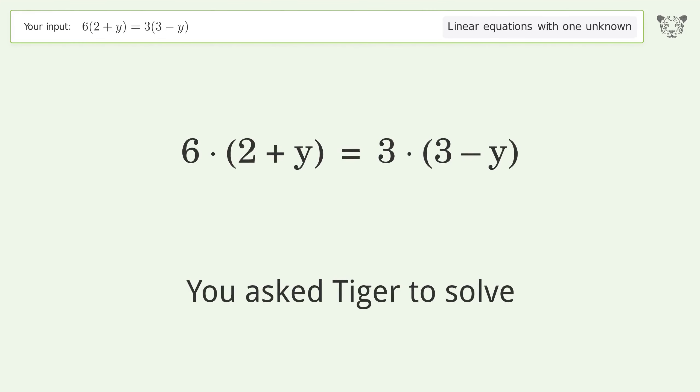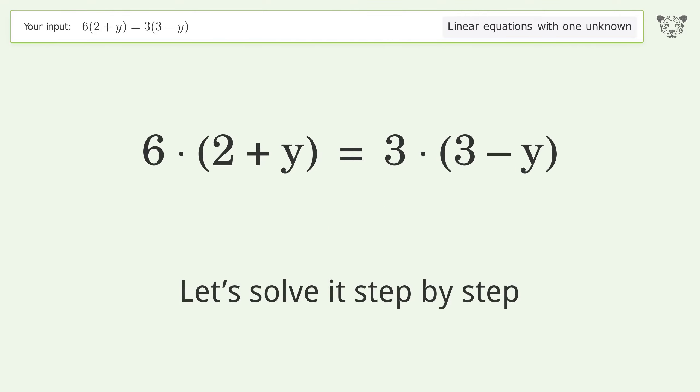You asked Tiger to solve this. It deals with linear equations with one unknown. The final result is y equals negative 1 over 3. Let's solve it step by step.